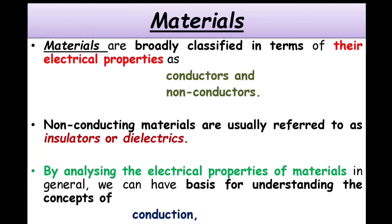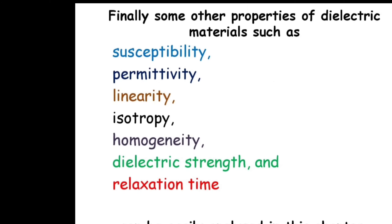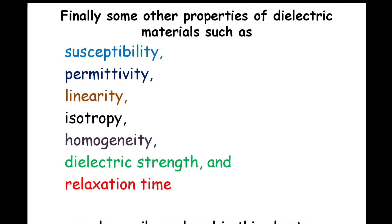By analyzing the electrical properties of materials, we can foresee the conduction, electric current, and polarization of those particular materials. Apart from these, we can also study other properties of dielectric materials, such as susceptibility, permittivity, linearity, isotropy, homogeneity, dielectric constant, and relaxation time. These can all be easily analyzed in the coming topics of our chapter.